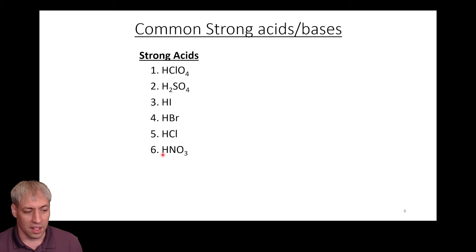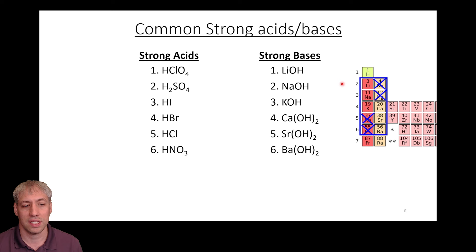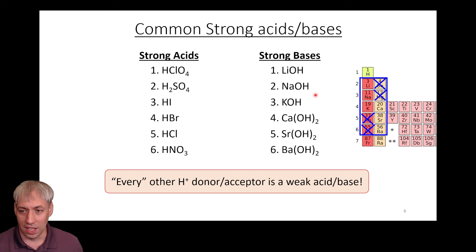There are also six common strong bases: lithium hydroxide, sodium hydroxide, potassium hydroxide, calcium, strontium, and barium hydroxide. It's basically this portion of the periodic table. These strong acids and bases completely dissociate. For every strong acid you put in solution, you get an H+. For every OH- you put in solution, you steal an H+ from somewhere else.